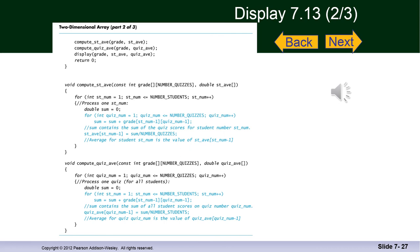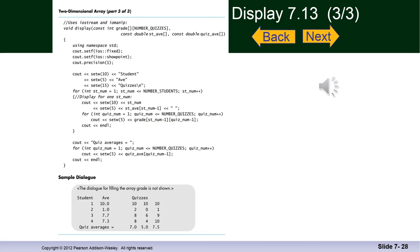This is part two of three slides, and you see the function definition for the computing student average and the computing quiz average. And finally, you see the function definition for display, which sets all the flags for nice neat output, and you see a sample dialog at the bottom of the slide. Once again, we will do this in class.